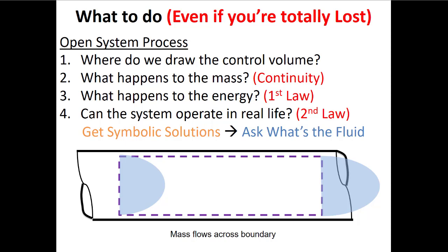Once we get symbolic solutions — maybe it's the power from a turbine or heat transfer in a boiler — we need to fix the states to get numerical answers. To do that we need to know what the fluid is. This is always a two-part question: for water near a vapor dome, we ask what phase it is — subcooled liquid, two-phase mixture, or superheated vapor. For ideal gases, we ask whether specific heat is constant or variable.